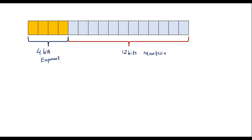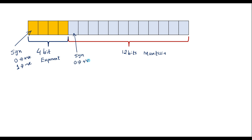In the 4-bit exponent, the first bit is the sign bit. If this bit is 0 the number is positive, and if it is 1 the number is negative. Similarly, in the mantissa part, the first bit is also a sign bit — 0 indicates positive and 1 indicates negative.